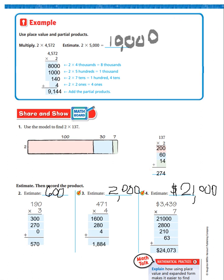So, now what we want to do is we want to look at estimate, then record the product. 190 is close to 200. So, 200 times 3, I'm going to estimate that as 600. So, now I would say 3 times 100 is 300. 3 times 90 is 270. 3 times 0 is 0. My answer is 570. And that is probably correct because my estimate was 600.